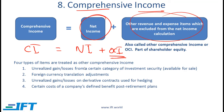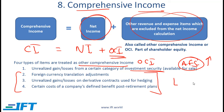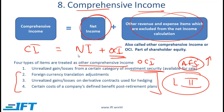There are four types of items that are treated as other comprehensive income. Unrealized gains and losses from a certain category of investment security called AFS is treated as other comprehensive income. This means that if the value of an AFS security goes up, that is a gain, but this gain is not shown in the income statement — it is shown in the equity segment of the balance sheet as other comprehensive income. We will see this in detail in the next reading on the balance sheet. The other items — foreign currency translation adjustments, unrealized gains and losses on derivative contracts used for hedging, and certain costs of a company's defined benefit post-retirement plan — you just need to memorize for now and will learn about them at Level 2 of the CFA program. These are items which impact OCI and not the net income.